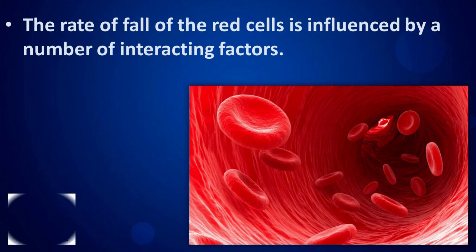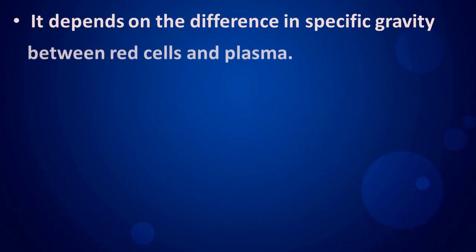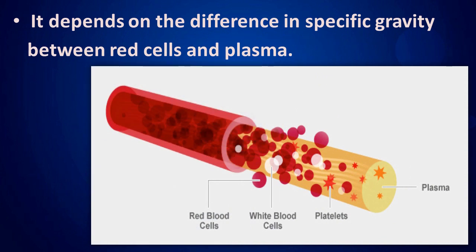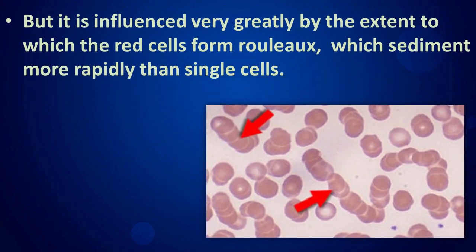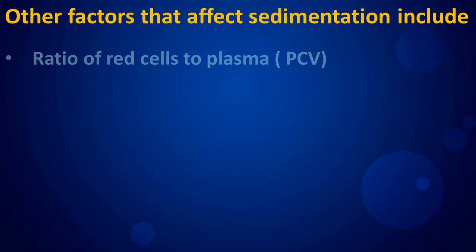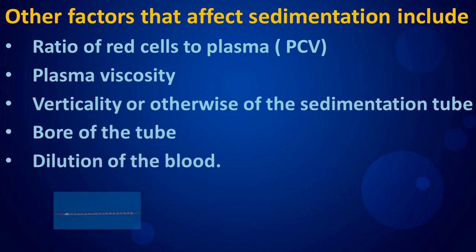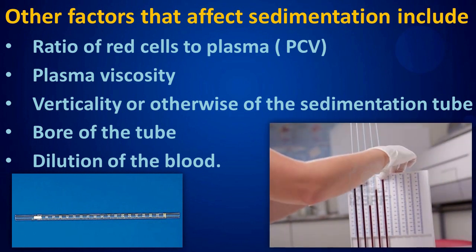The rate of fall of red cells is influenced by a number of interacting factors. It depends on the difference in specific gravity between red cells and plasma, but is influenced very greatly by the extent to which red cells form rouleaux, which sediment more rapidly than single cells. Other factors that affect sedimentation include ratio of red cells to plasma, PCV, plasma viscosity, verticality of the sedimentation tube, bore of the tube, and dilution of the blood.